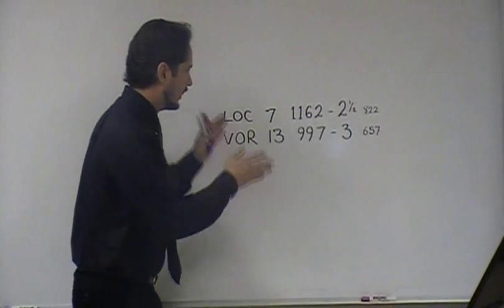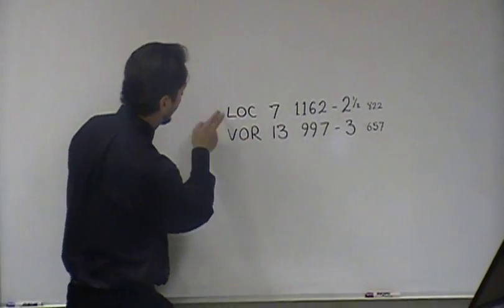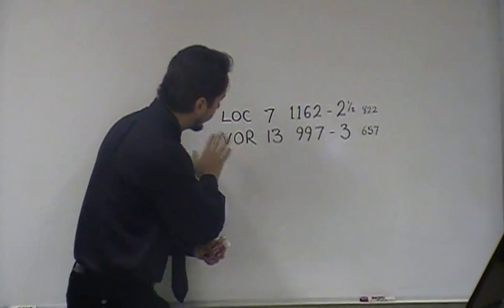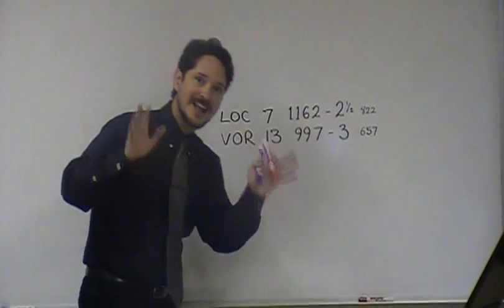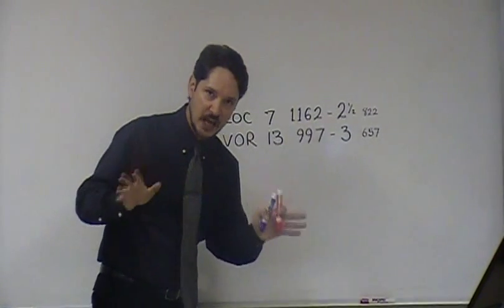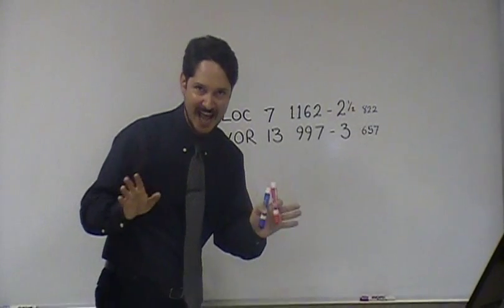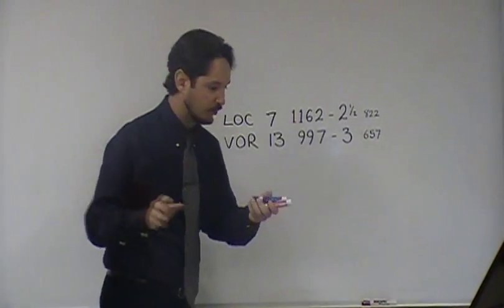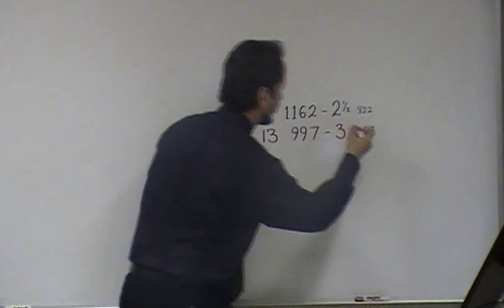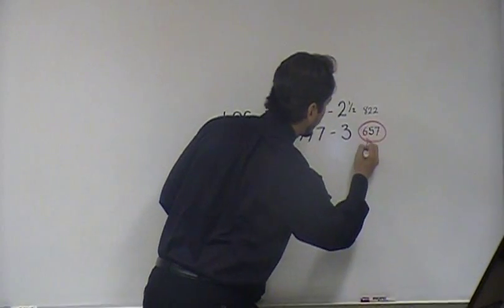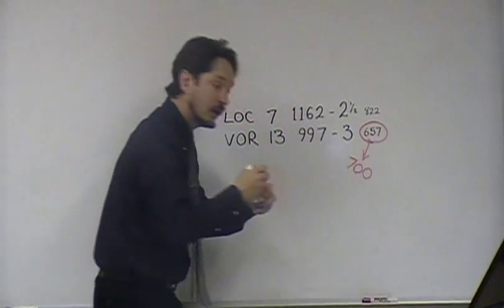Let's do an example. Here we have an airport with two approaches: a localizer to runway 7 and a VOR to runway 13, and these are the minimums. Remember, we need AGL, not MSL — we're looking for the HAA, the height above airport. So we're going to find the lowest circling value, and that's 657 feet, which we are then going to round up to 700.